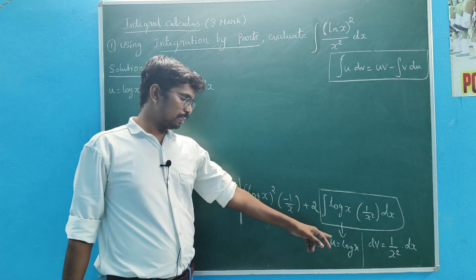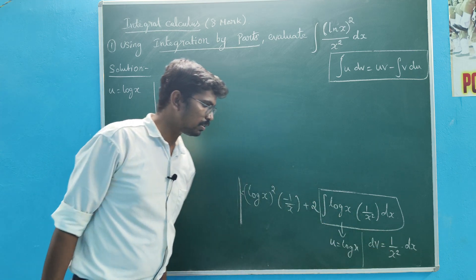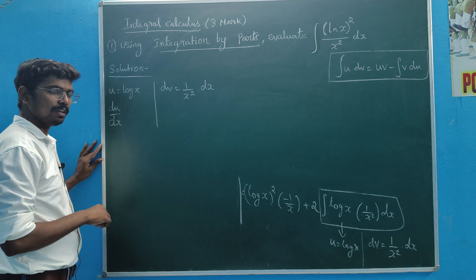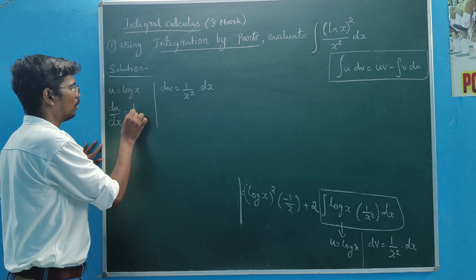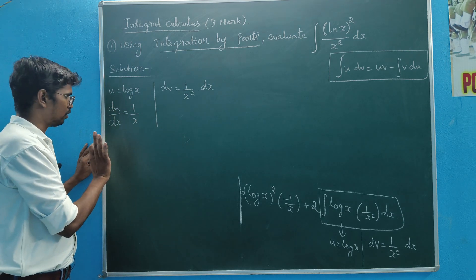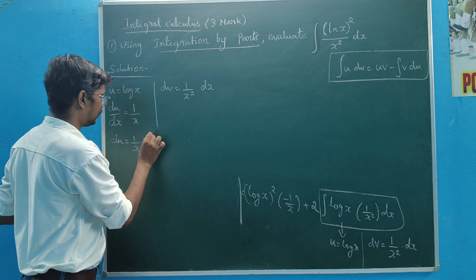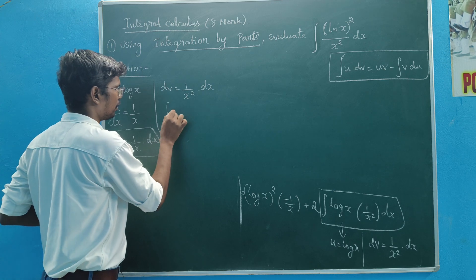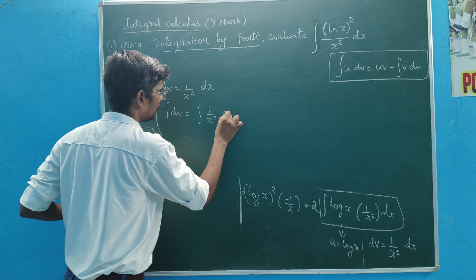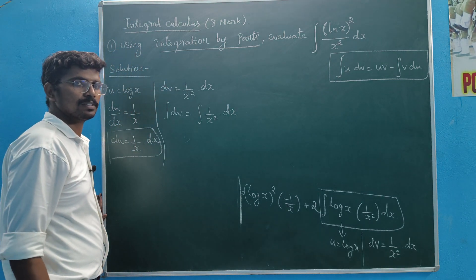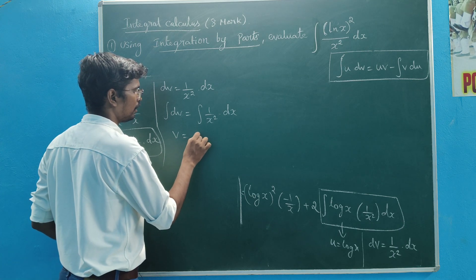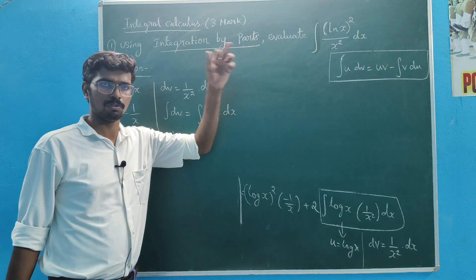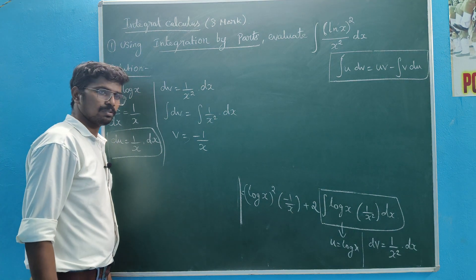If we look at u equal to log x — last step — dv equal to 1 by x square dx. If we consider u equal to log x, then du/dx is equal to 1 by x. If we consider u equal to log x, then log x is equal to 1 by x, and 1 by x is equal to dx.